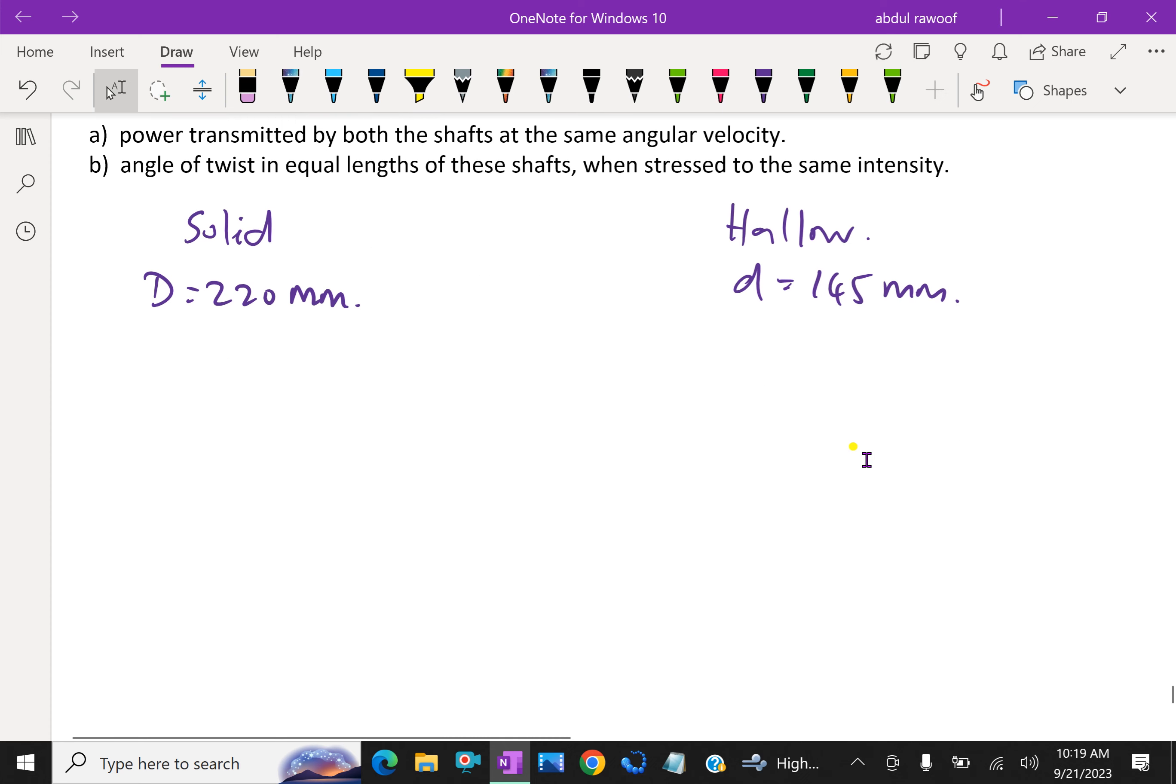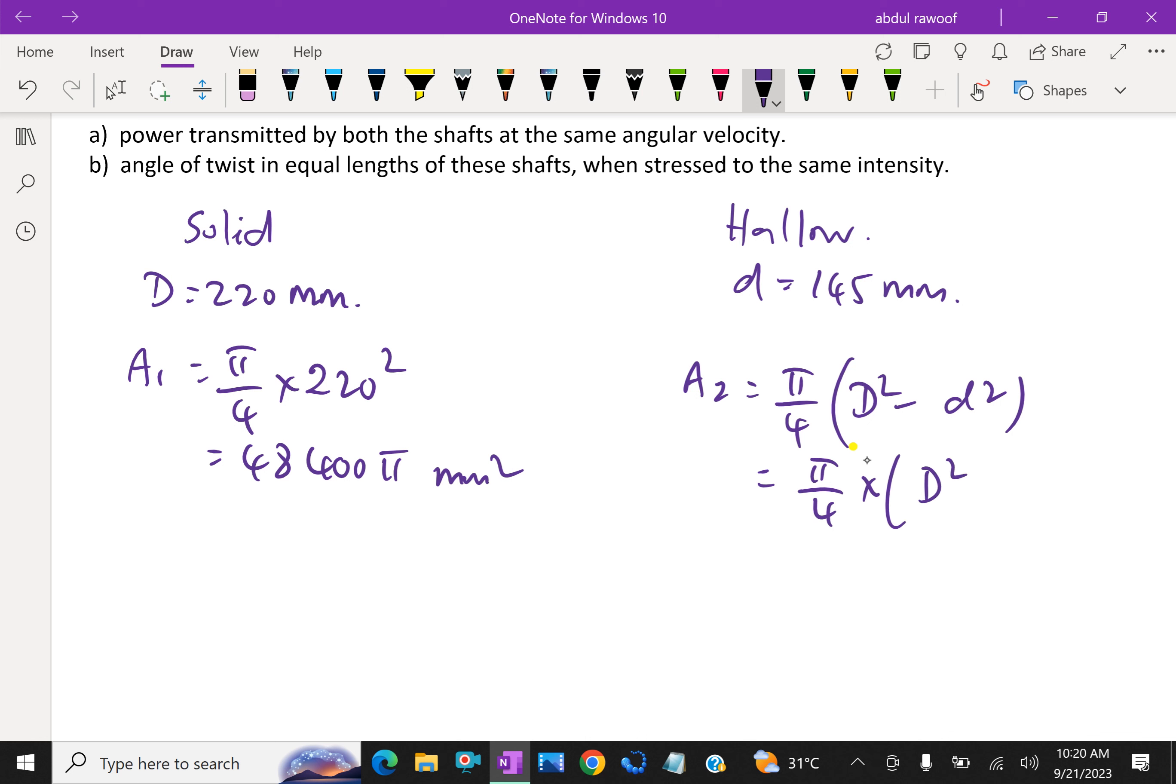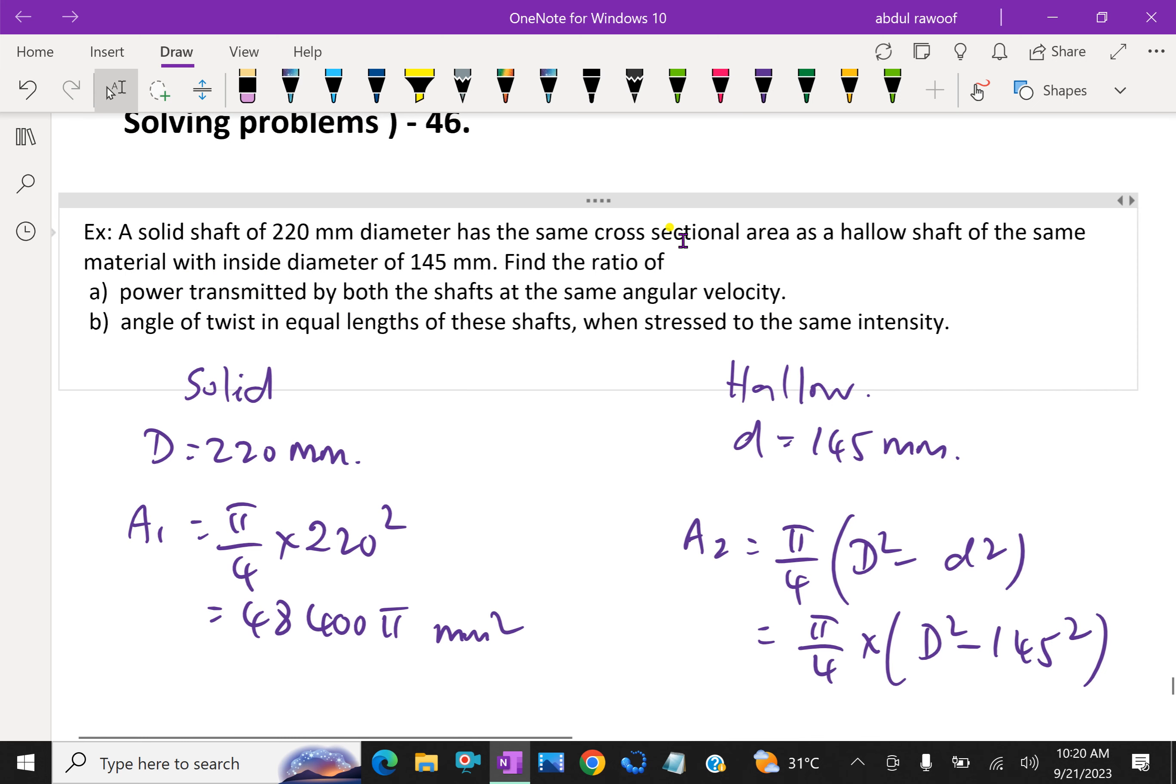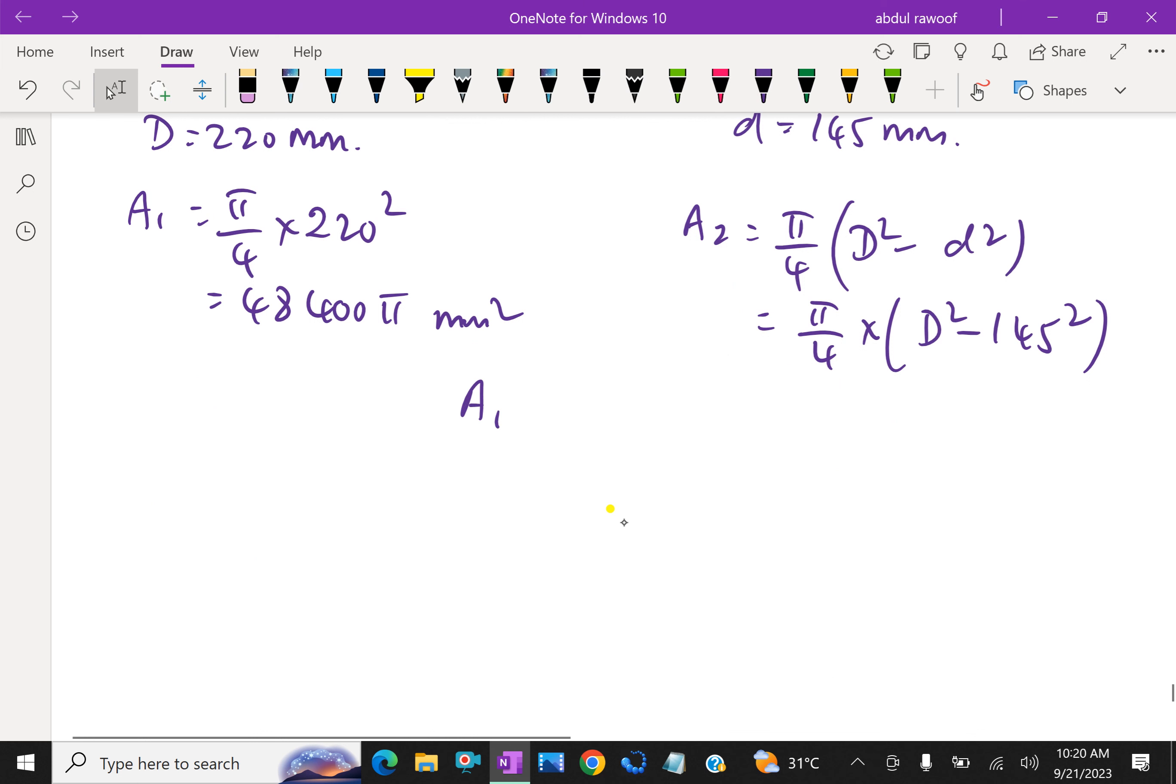Then A1, cross-sectional area of the solid is π/4 D² which is π/4 × 220², which gives 38,405 mm². Then A2 equals π/4 (D² - d²) equals π/4 (D² - 145²). Now both having same cross-sectional area means we have to equate A1 equal to A2.